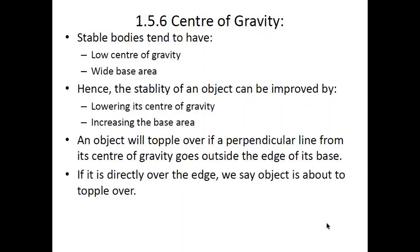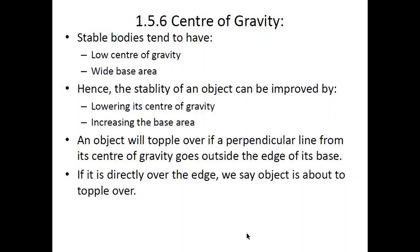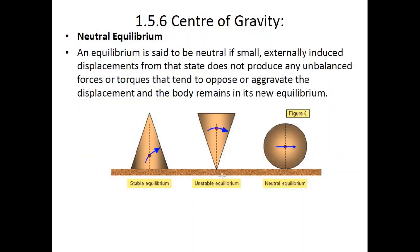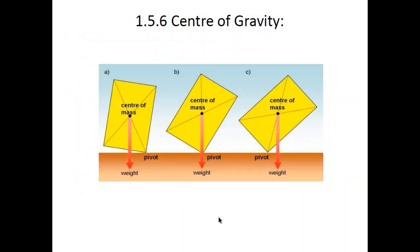Stable bodies tend to have a lower center of gravity. A body is more stable if its base area is wide and its center of gravity is low. An object with very little base area and a very high center of gravity cannot be stable and will fall over. Hence, the stability of an object can be improved by lowering its center of gravity and increasing its base area. An object will topple over if a perpendicular line from its center of gravity falls outside the edge of its base; if it is directly over the edge, the object is about to topple.